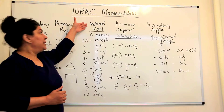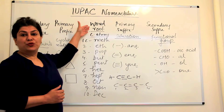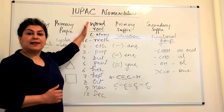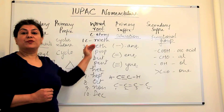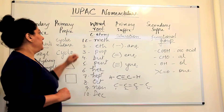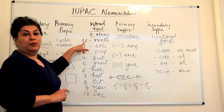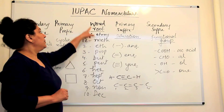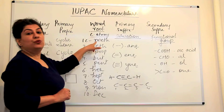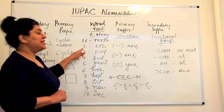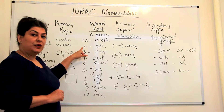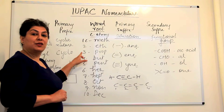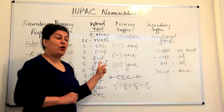The first part is the word root — the central part. The word root tells us the number of carbon atoms in a molecule. If the molecule has only one carbon atom, the word root used is 'meth.' If it has two carbon atoms, the word root is 'eth.' If it has three carbon atoms, the word root is 'prop.'